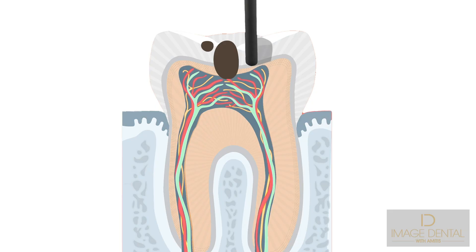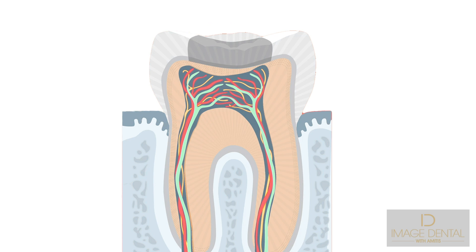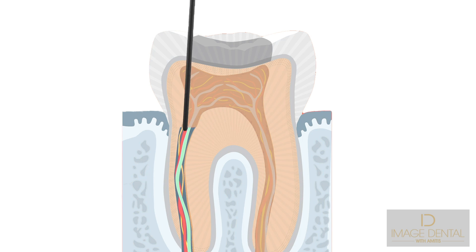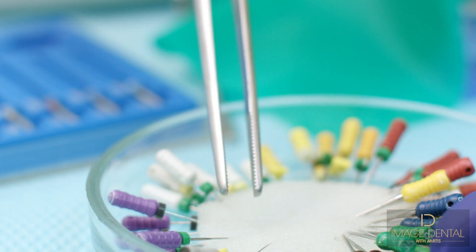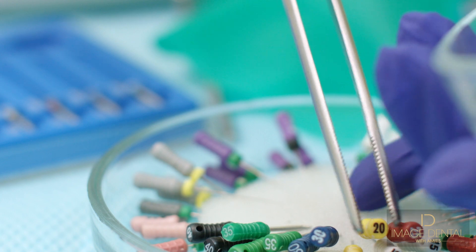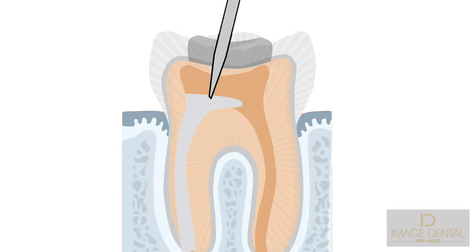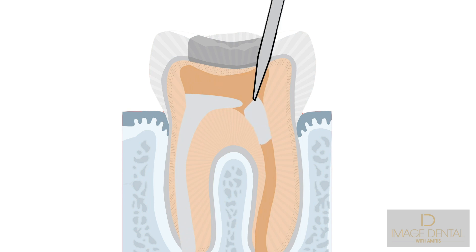Then using various dental drills, an opening is made through the crown into the pulp chamber. Then the infected contents of the pulp chamber are carefully removed using a series of tiny files of increasing diameter. After cleaning the root canal, the space created is filled with cones made of a natural substance called gutta-percha, covered with a liquid sealer.